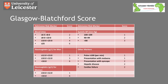The Blatchford score is more difficult to calculate as you require the results of blood tests as well as clinical parameters. However, it does have an advantage over the Rockall score as it predicts the need for intervention in the form of blood transfusion or endoscopy. A patient with a score of zero should be safe to discharge home without inpatient endoscopy, and those with scores of one to three should be considered fairly low risk. Scores above three are associated with a much higher need for intervention, and these patients should certainly be kept in hospital for further assessment and management.